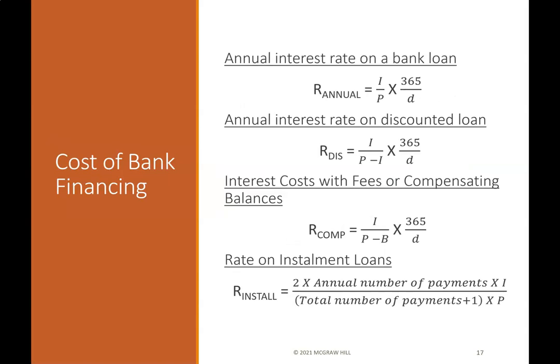Cost of bank financing formulas: Annual interest rate on a bank loan equals I divided by P, times 365 divided by D. Annual interest rate on a discounted loan equals I divided by (P minus I), times 365 divided by D. Interest costs with fees or compensating balances equals I divided by (P minus B), times 365 divided by D. Rate on installment loans equals 2 times annual number of payments times I, divided by (total number of payments plus 1) times P.